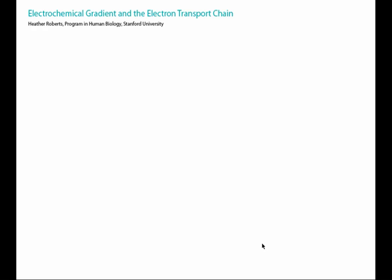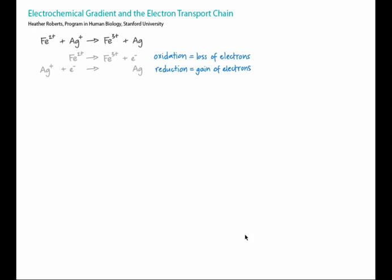In the redox reactions in metabolism tutorial, we saw that many reactions in metabolism involve the transfer of electrons from one molecule to another. This transfer is an example of a redox reaction, in which an oxidation is coupled with a reduction. The atom or molecule that loses electrons is oxidized, and the atom or molecule that gains electrons is reduced.